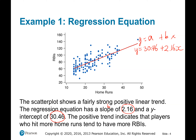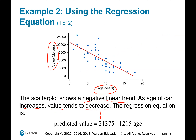These should have the same meaning as slope and y-intercept. Here, a is the y-intercept and b is the negative slope, which is negative 1215.